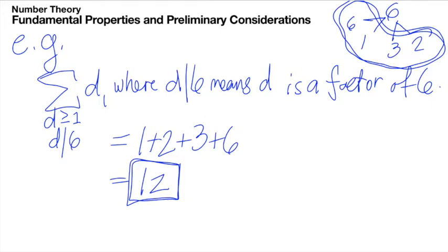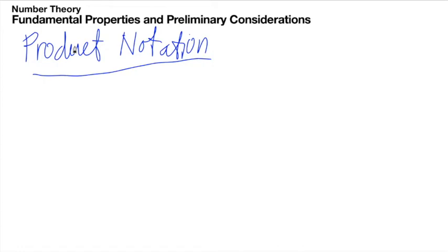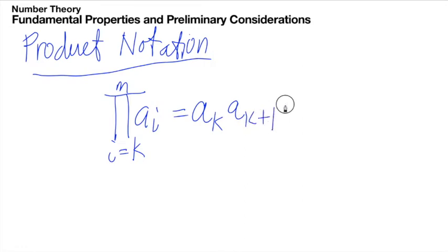Before we conclude this video, let's have this last one, the product notation. Just as the summation notation is used to denote sums, the product of a sub k times a sub k plus 1 times up until a sub n is denoted by the capital product symbol pi, the Greek capital letter pi. We write this as the product of a sub k times a sub k times a sub k plus 1 times a sub m. This is our product notation.